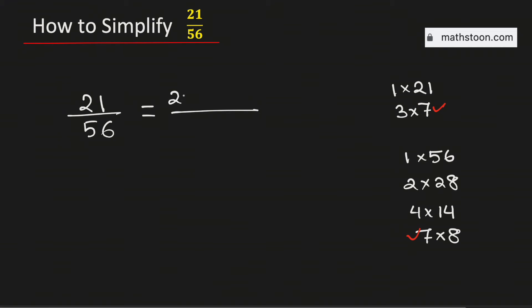Now to simplify this fraction we will divide both the numbers 21 and 56 by their greatest common factor, which is 7.